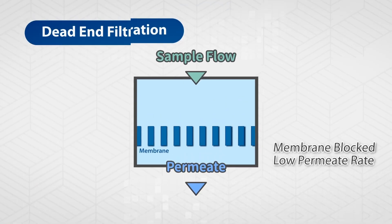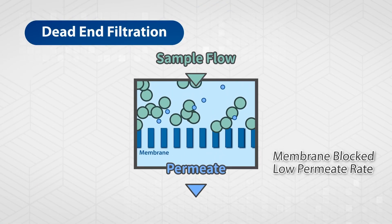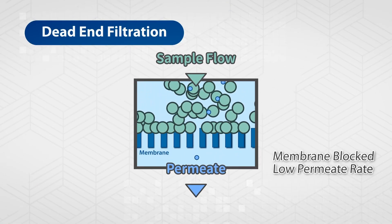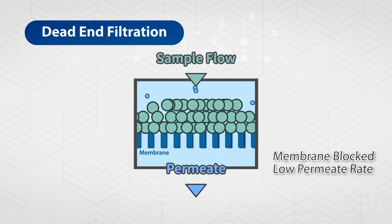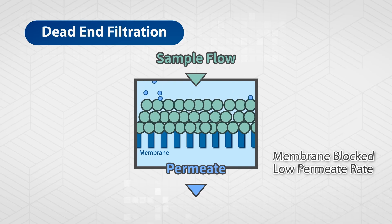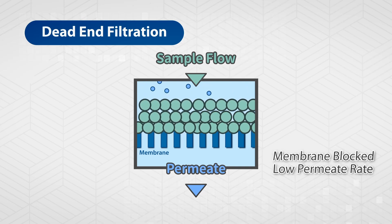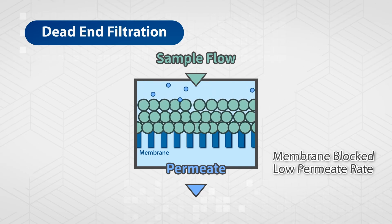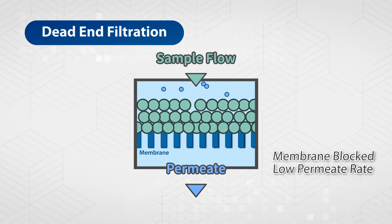In dead-end filtration, the sample stream flows vertically through the membrane. In this way, macromolecules can easily accumulate on the membrane surface and eventually lower the flow rate.